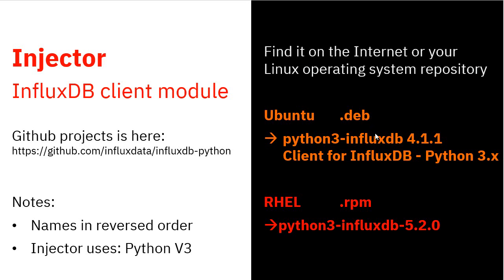For Ubuntu, you're looking for a .deb file — this is the name and version I'm using. On Red Hat, the version number seems to have gone up but I haven't noticed any particular difference — Red Hat and other Linux distributions need RPM files. Note that this is for Python 3, hence the 3 in the name. There's another one without the 3 — that's for Python 2.7 and won't work with the injector. Also note that GitHub says 'influxdb-python' and the module is called 'python-influxdb' — we must get that 3 in the name.